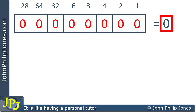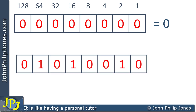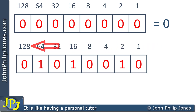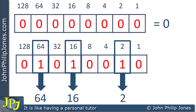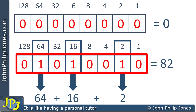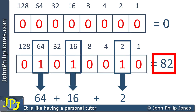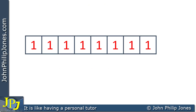Let's consider another byte example with place values shown doubling from 1 to 128. There's a one in the twos value so we write that down, a one in the 16 position so we write that down, and a one in the 64 position so we write that down. All other positions have a zero. Adding 64 plus 16 plus 2 gives the value of 82.